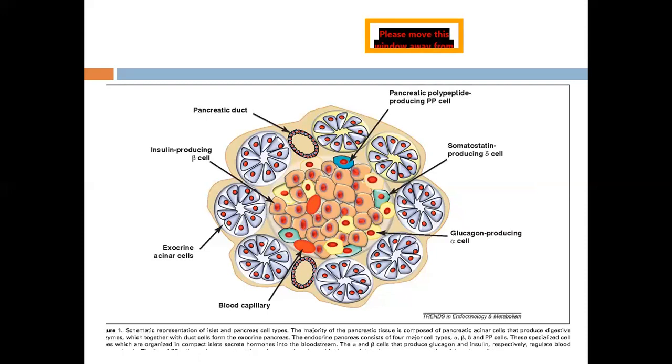We need alpha, beta, delta, D and D1, PP and G cells. These cells cannot be differentiated from one another by routine histological examination, but we can identify alpha and beta.